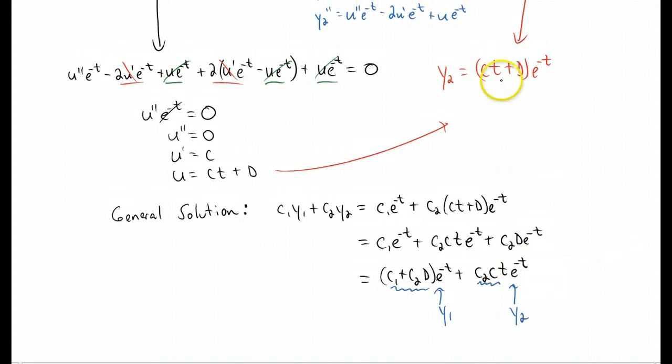So basically what that means is we could have just gone all the way up here and said well we don't really need these constants. So we can just call c equal to 1, and we can call d equal to 0. And that would have immediately given us the simplest version of y2, which is just t e to the negative t.